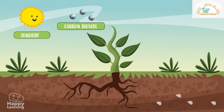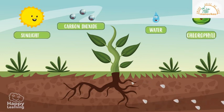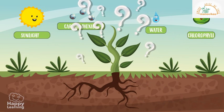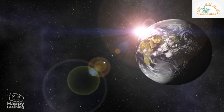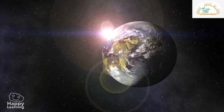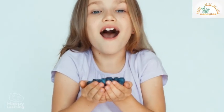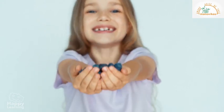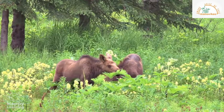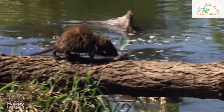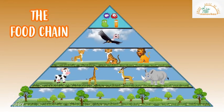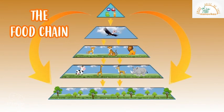Now you know how photosynthesis takes place — but why is it so important? Without plants, there would be no life on earth. We wouldn't have oxygen to breathe or food to feed on. Herbivores eat plants and carnivores eat herbivores, so plants are fundamental for the food chain.